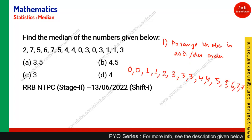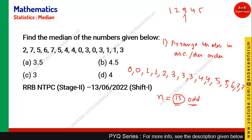You should do it very carefully — if you do it properly, this question is very simple. After arranging the data in ascending order, you need to count the number of observations. Counting: one, two, three... fifteen. So the number of observations n is 15. Now n can be either even or odd. Here n is odd. For example, say we have five observations: one, two, three, four, five. The midpoint of this data set is three — that is the median.